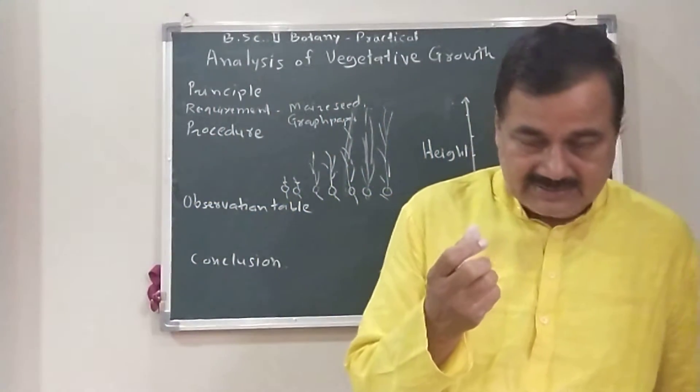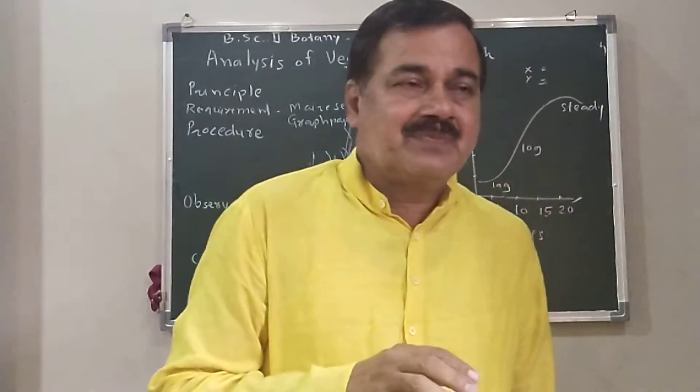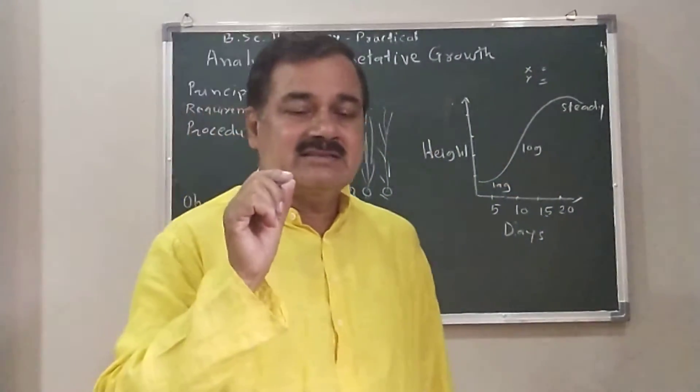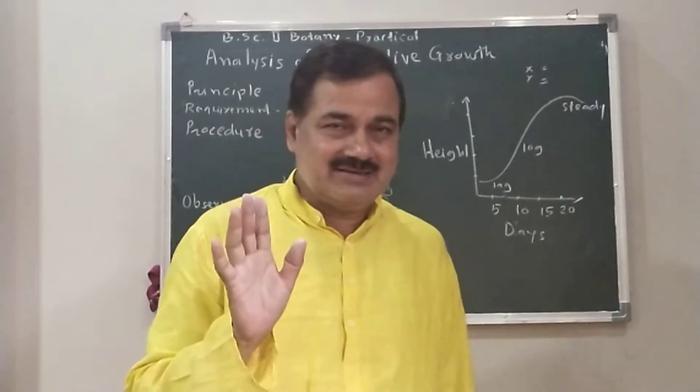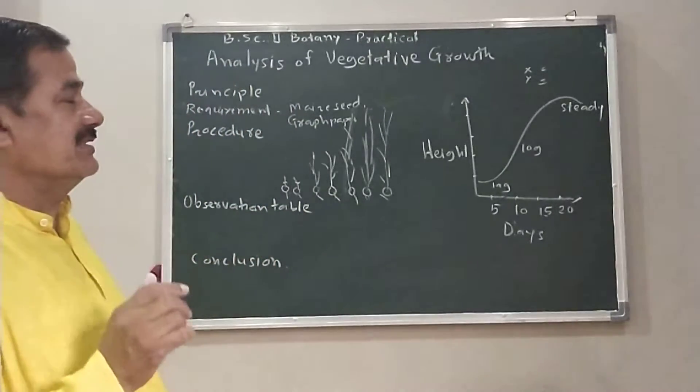After three to four days, the germinated seeds are taken outside. Out of the seeds, seven are selected artificially, not naturally, out of the many seeds.